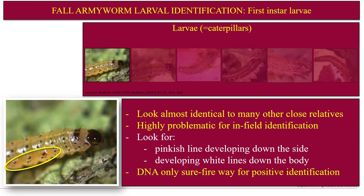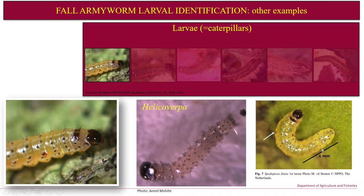Look for that spotty appearance, but in addition to that, the very beginnings of a pink line down each side of the body — I've highlighted it there — and developing white lines running longitudinally down the body as well. For positive confirmation, it's either through rearing or DNA work. This also shows a couple of other caterpillars of different species — Helicoverpa or Spodoptera litura — one of the species that occurs in Australia, to show you how similar they look.